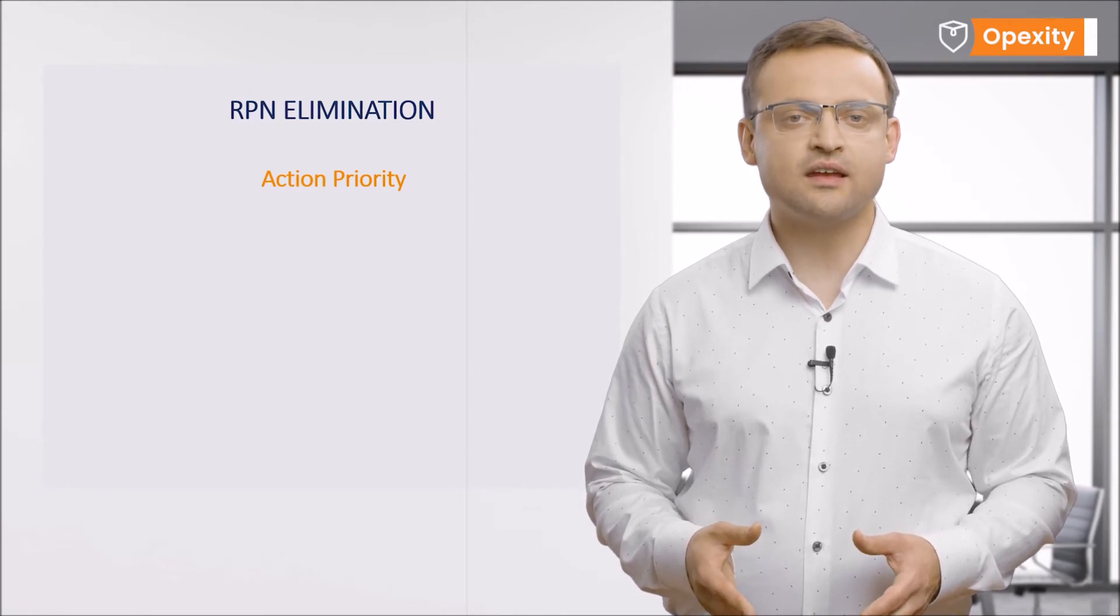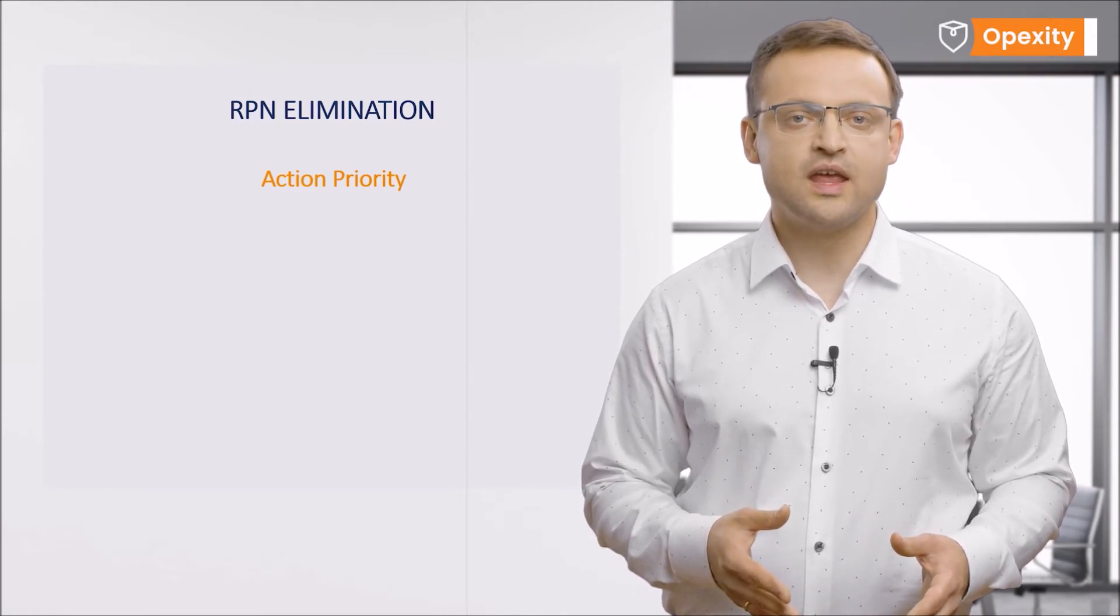RPN has been replaced with another factor. What was its purpose? Eliminating the risk priority number and replacing it with an action priority is intended to properly prioritize risks and prevent manipulation of the S, O, and D rates.